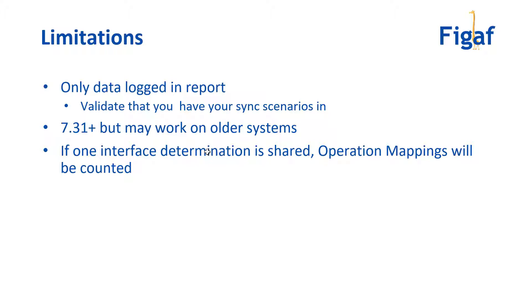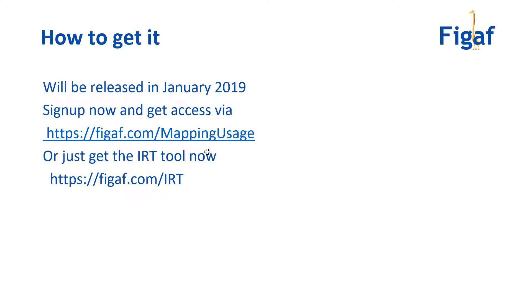One limitation is that if you have multiple scenarios — an ICO with an interface receiver determination — and it is using the same outbound interface for multiple receivers, it may not be able to determine the correct one, and in that case it will just count all of them. There are probably more limitations we'll discover. We are planning on releasing this at the beginning of January so you can use it for your migration purposes.